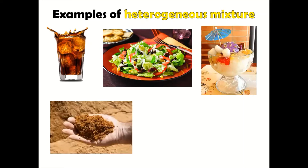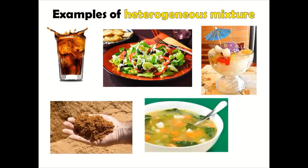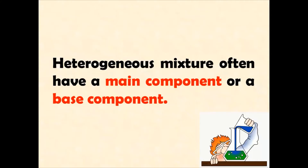Here are some examples of heterogeneous mixtures: ice cube in soda, vegetable salad, halo-halo, sand, and vegetable soup. The ingredients or components of these mixtures can be easily seen with our naked eye. Heterogeneous mixtures often have a main component or a base component. The main component is the most abundant component into which the other ingredients are mixed. Let us go back to some of our examples and identify the main component of the mixture.